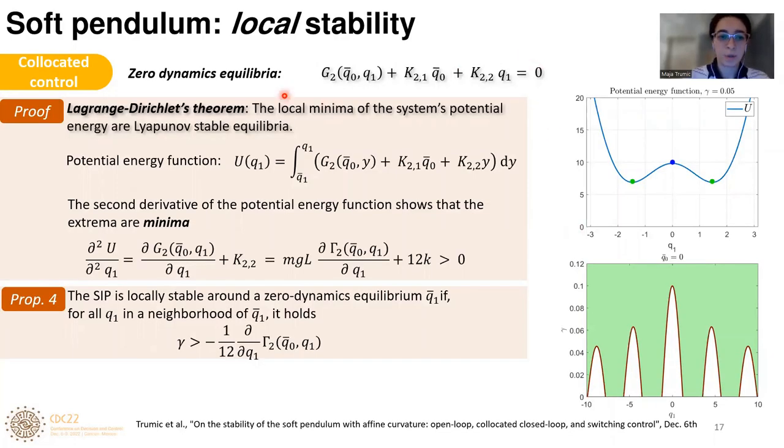As a first step, we can focus on zero-dynamics equilibrium conditions that are provided right here. Then we can recall Lagrange-Dirichlet's theorem that states that the local minima of the system's potential energy are Lyapunov stable equilibria. This theorem inspired us to consider potential energy function provided here. If we find its first derivative, we can see that it is exactly the same as zero-dynamics equilibria conditions, which means the equilibria of zero-dynamics are exactly the extreme points of potential energy function. To be sure that these extreme points are actually minimum of the system's potential energy, we calculate the second derivative and state that the condition to be minima is that the second derivative is greater than zero, which is reflected in this condition.